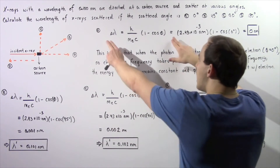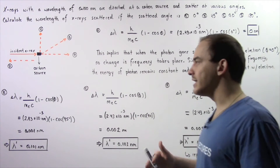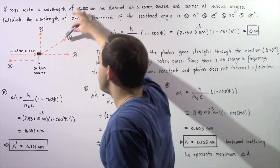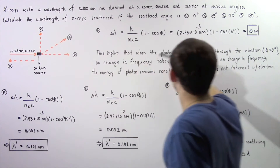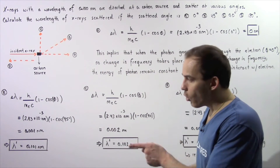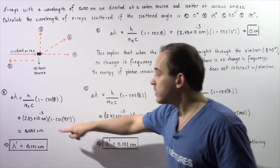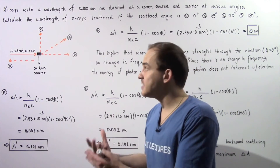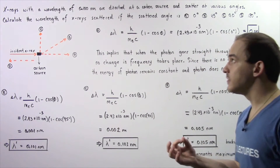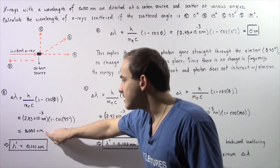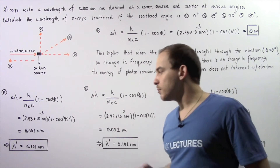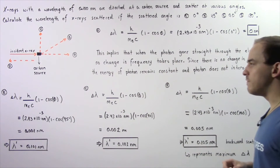Now let's move on to Part B. We apply the same equation to calculate the change in wavelength when the collision takes place at an angle of 45 degrees, as shown in Part B. We have 2.43 × 10⁻³ nanometers multiplied by 1 minus cosine of 45°, giving us about 0.001 nanometers. To find the wavelength of the scattered x-ray, we add this to 0.100 nanometers to get 0.101 nanometers.